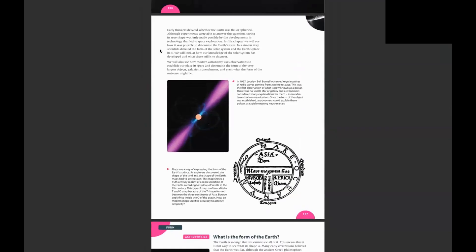Have you studied anything about the solar system, the sun, and related topics before? I know the planets, rotation, and revolution — that's all I've studied. How many planets are there? Eight. Name them in order: Mercury, Venus, Earth, Mars, Jupiter, Saturn, Uranus, Neptune. Very good.